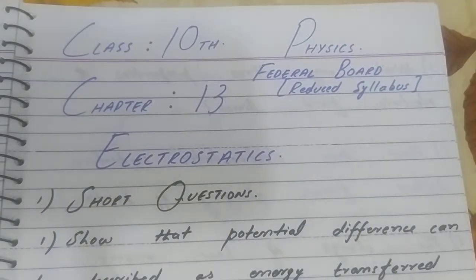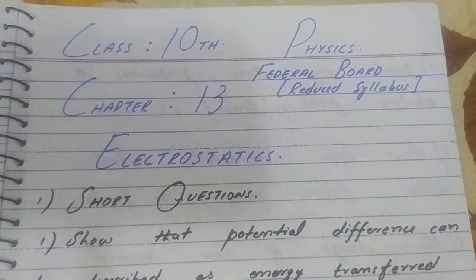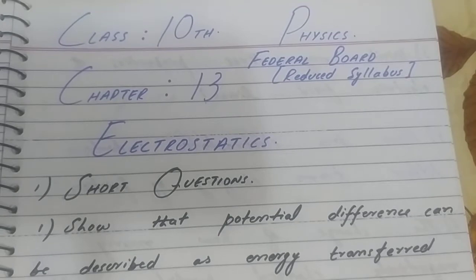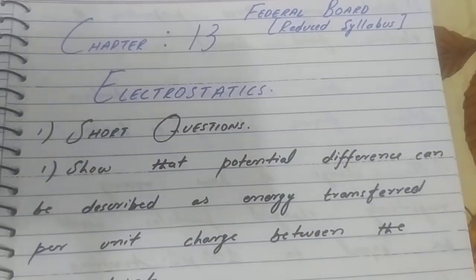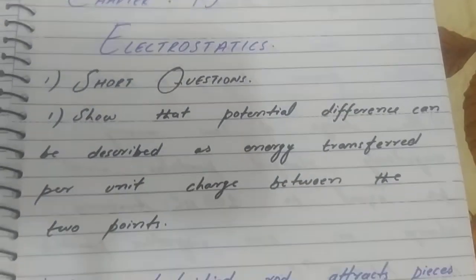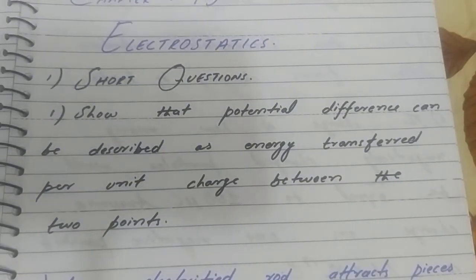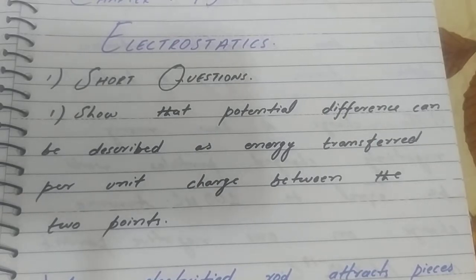Important questions of Chapter 13, Electrostatics. Let's start with short questions. Number one is: show that potential difference can be described as energy transferred per unit charge between two points.